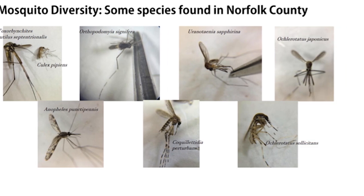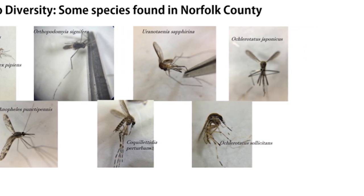Over here we have Urinotonia sapphorina. It's a very small mosquito with very bright blue metallic markings on its body — they're very pretty to look at under the microscope and it shines if you move it around. They only feed on worms. So this species of mosquito only takes blood meals from different types of worms. That's another species we don't really need to worry too much about.